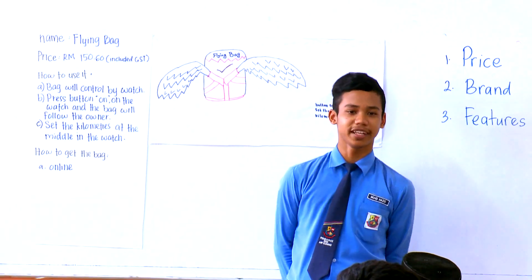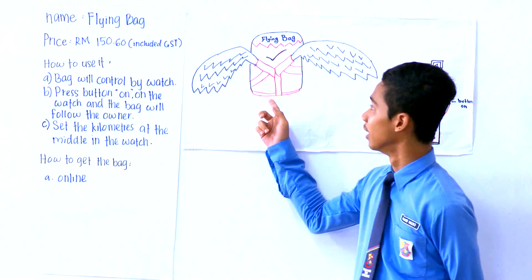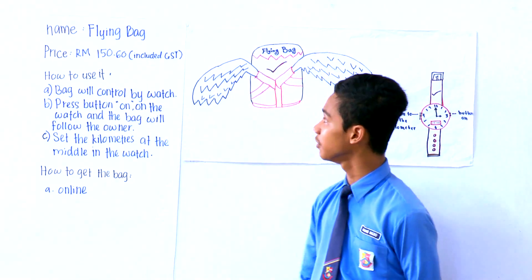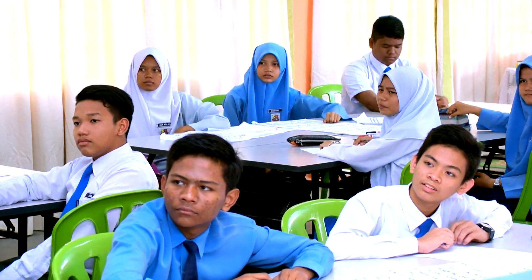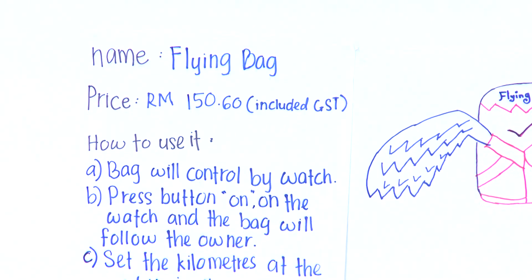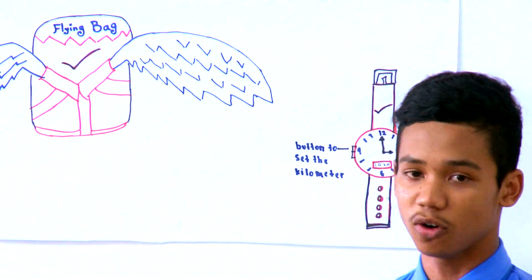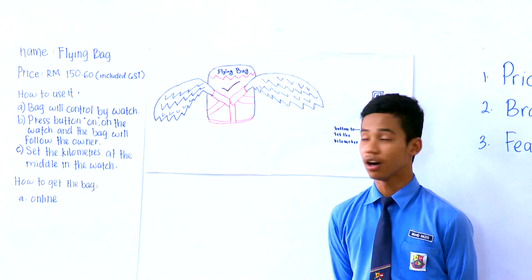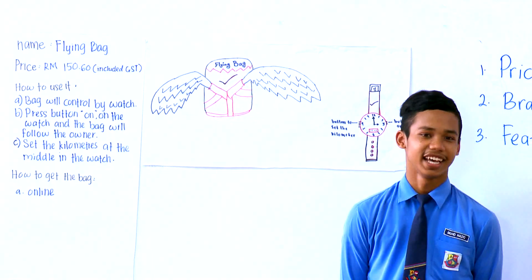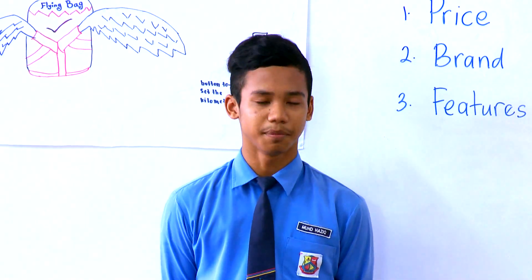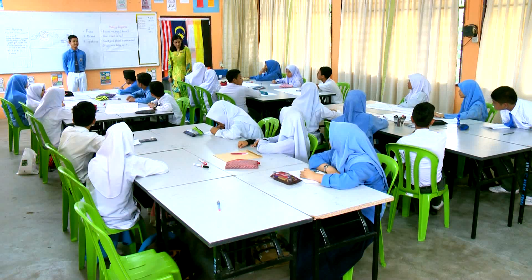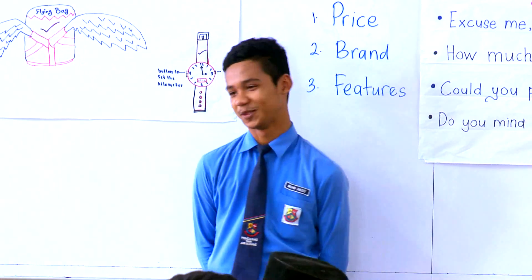Assalamualaikum and good afternoon to my friends. Today I want to present about the bag. The bag name is Flying Bag and the price is RM1.60. This is the bag — a discount for students. How to use it: the bag will be controlled by a watch. Press the button on the watch and the bag will follow the owner. Then set the kilometers at the middle of the watch. How to get the bag: online. Any question? Yes, Fikri. Could you please explain more on how to charge your bag? This bag can charge with battery. Does that answer your question? Yes. So how many batteries do you need? Eight batteries.